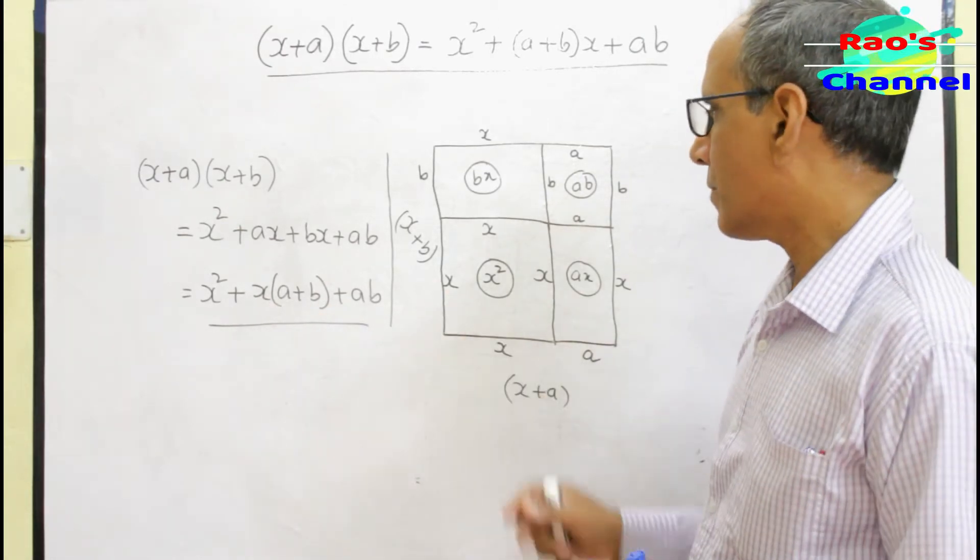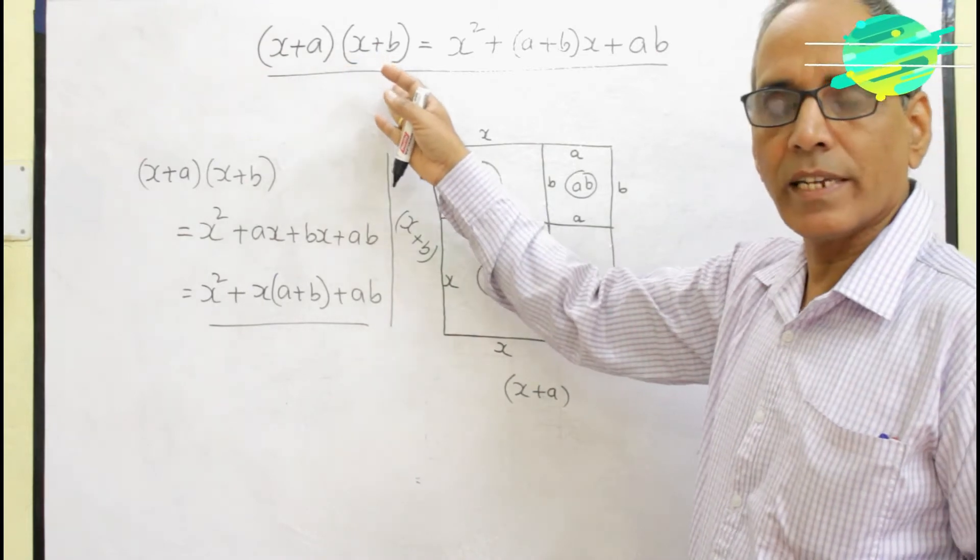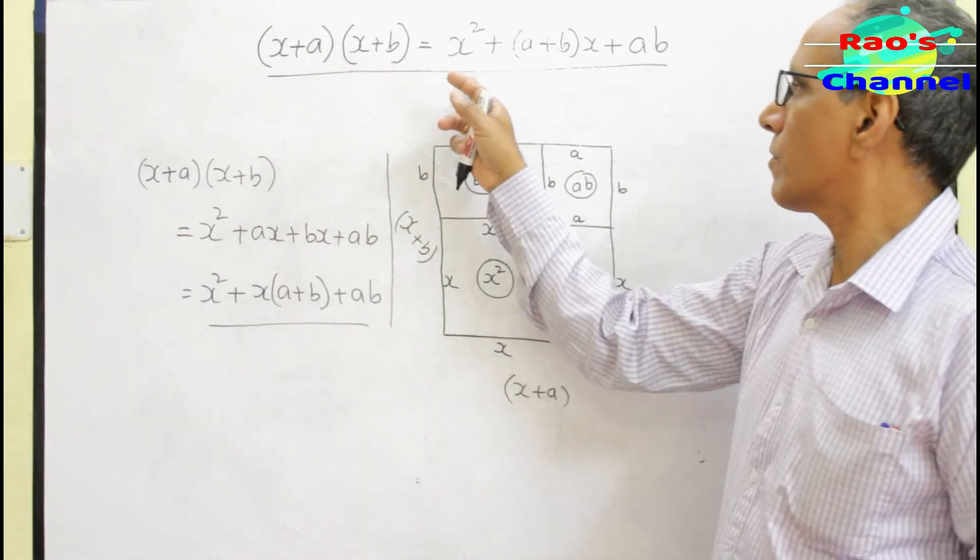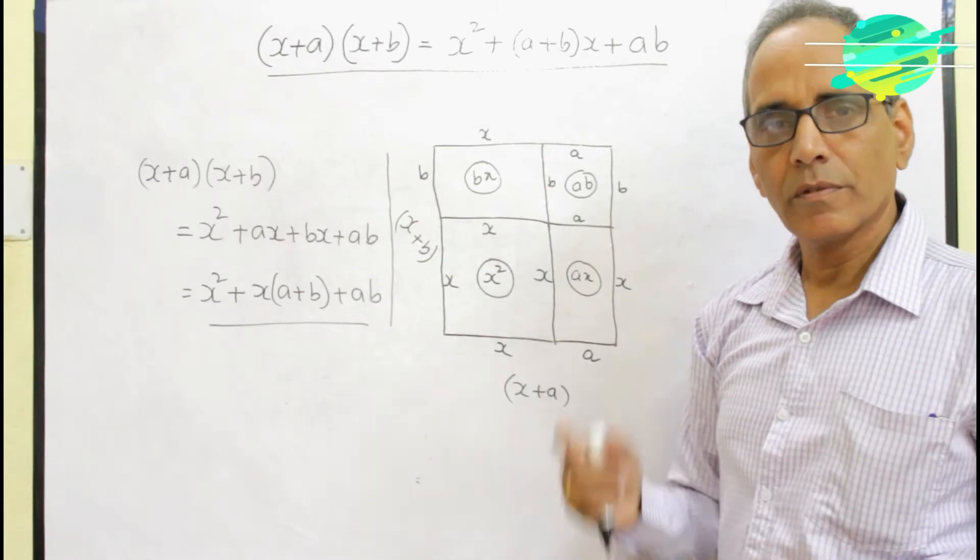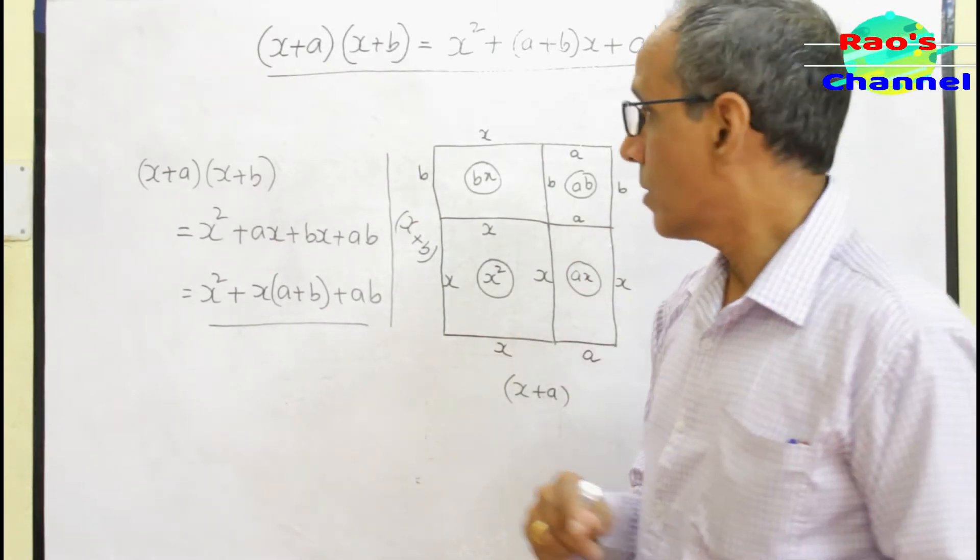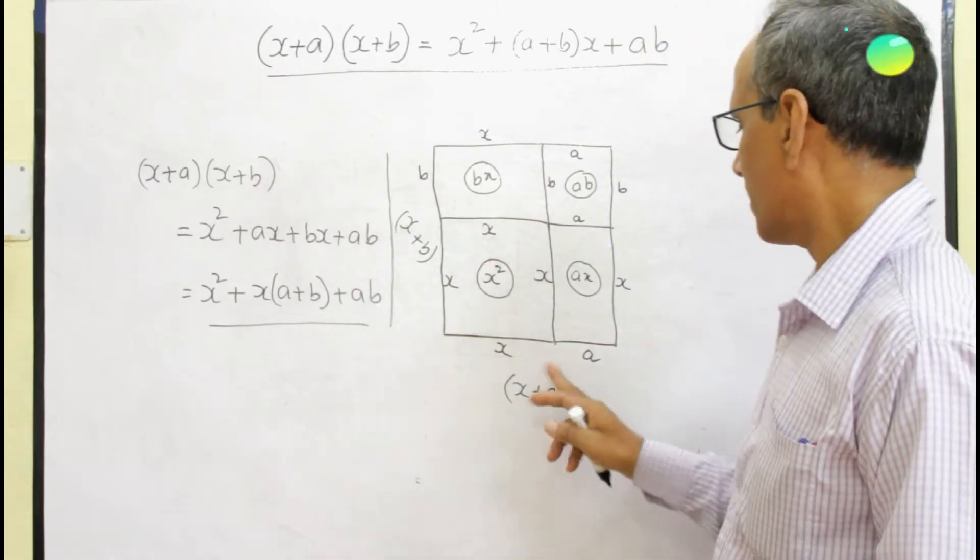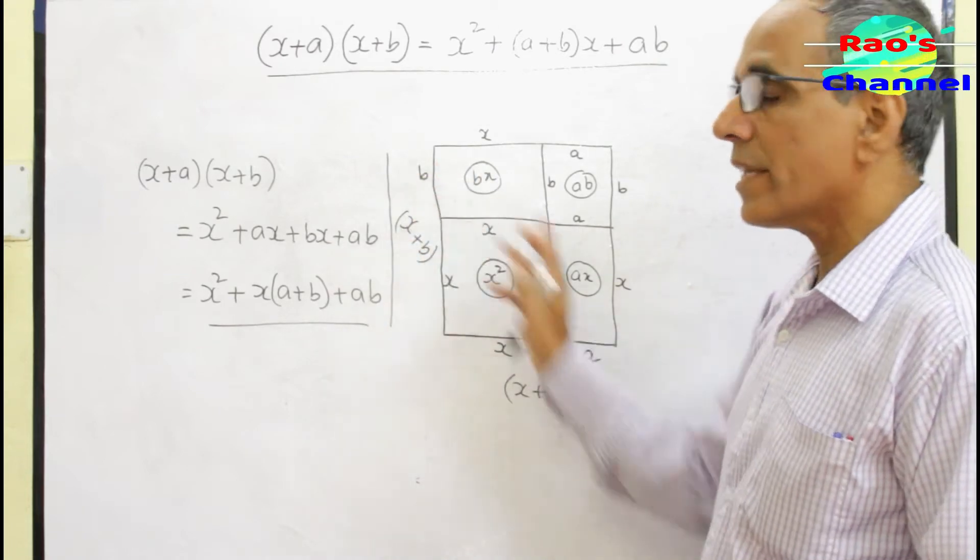This is the simple way of derivation of the special identity (x+a)(x+b), which is x² + (a+b)x + ab. In this question I increased both by a and b.